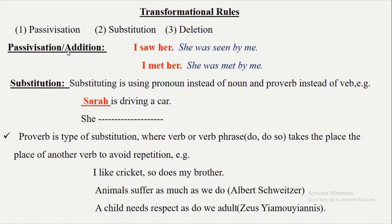Passivization is also called addition. Changing an active sentence into passive form by adding a few words is known as passivization — it is an additional rule of transformational rules. For example: 'I saw her' becomes 'She was seen by me.' 'I met her' becomes 'She was met by me.' Here, we have added 'by me' in both sentences and converted them into passive form.